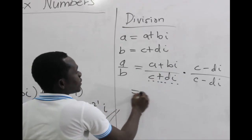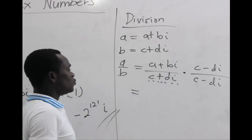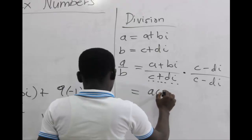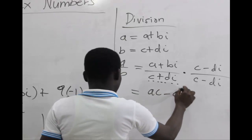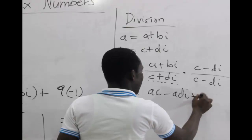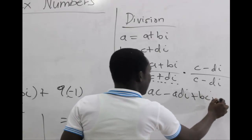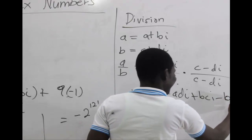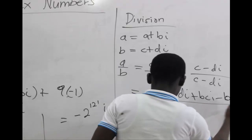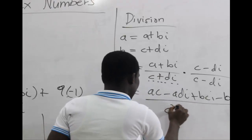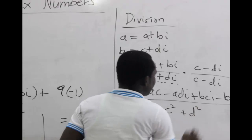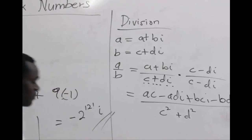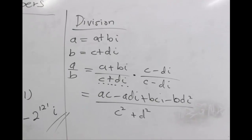We multiply out the numerator and denominator. The numerator expands to ac − adi + bci − bdi², all over c² + d². We then simplify further to get the final solution.